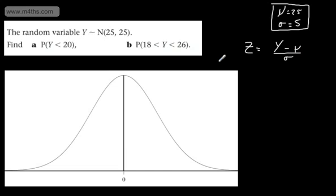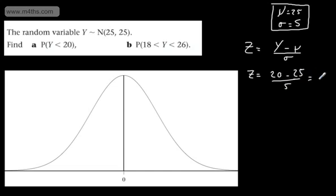Let's first focus on the probability of Y being less than 20. We make the substitution: z equals 20 minus mu, which is 25, divided by sigma, which is 5. That gives us minus 1. So we can now write this as the probability of z being less than minus 1, which satisfies what we're looking for. We just need to look this up in a table.